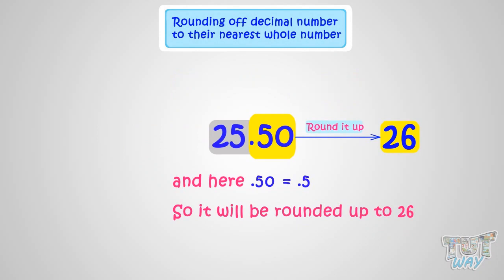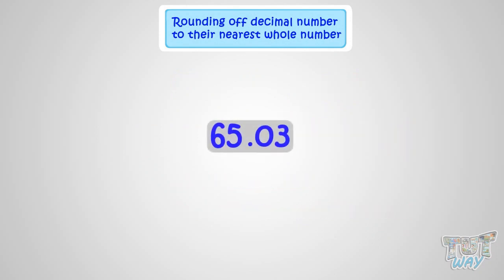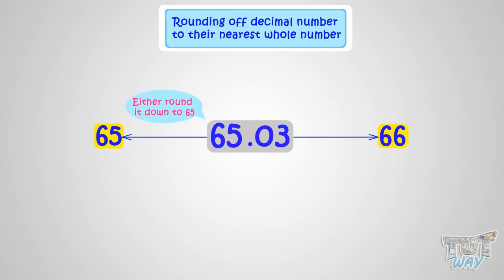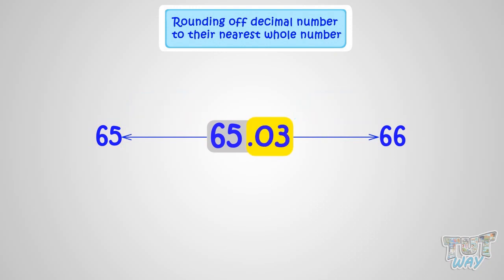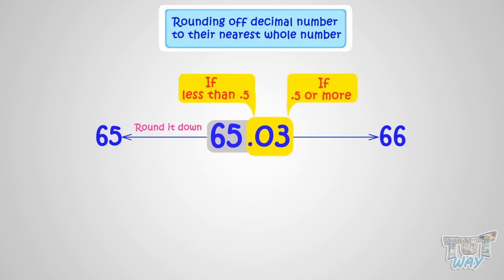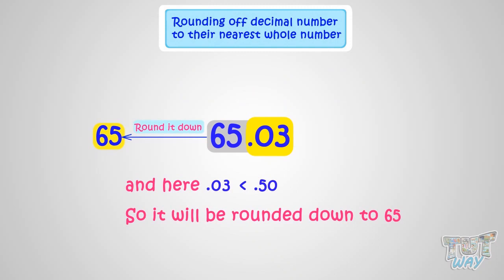Now let's learn another example. We have the number 65.03. We know this number is somewhere between 65 and 66, and it can be either rounded down to 65 or rounded up to 66. For that, we have to see the decimal portion, which is 0.03. If it's less than 0.5, it will be rounded down; if it's 0.5 or more, we round it up. 0.03 is less than 0.50, so the number will be rounded down to 65.